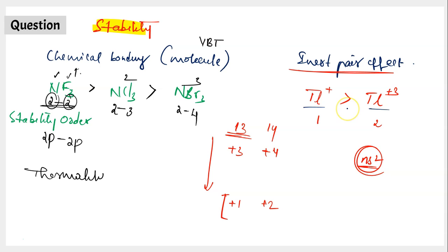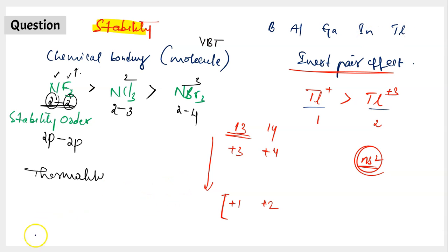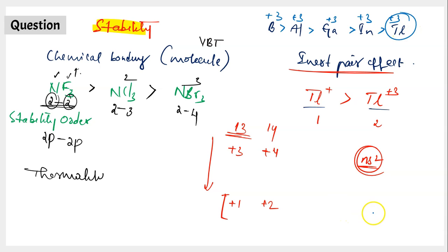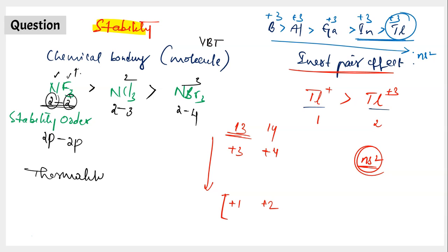Whenever you compare the stability of cations or anions in p-block, apply the concept of inert pair effect. Observe the position of those elements in the group — if an element is towards the end of the group, it is stable in its lower oxidation state; if it is at the top of the group, it is stable at its higher oxidation state. For group 13 — boron, aluminium, gallium, indium, thallium — the maximum oxidation state is +3. If asked for stability in their +3 state, boron is most stable in +3, while thallium is least stable in +3, because inert pair effect increases as you go down the group, making the +3 state less stable.